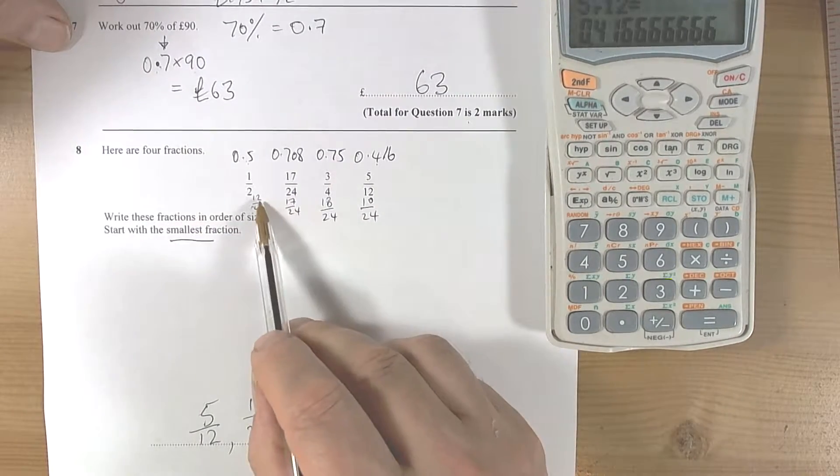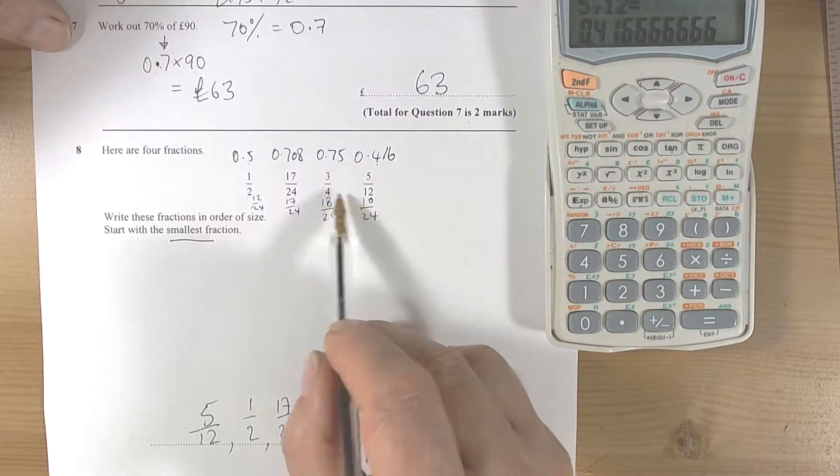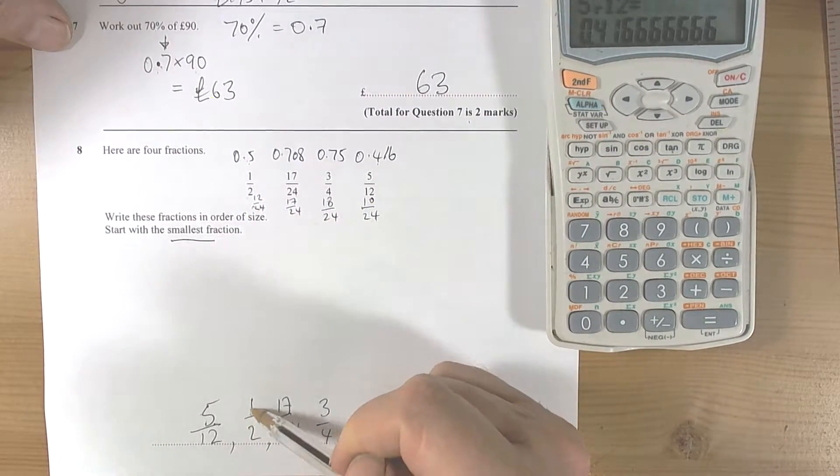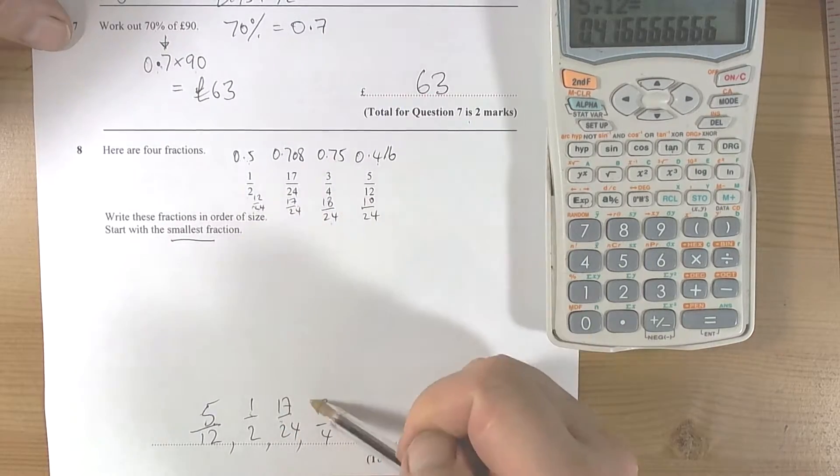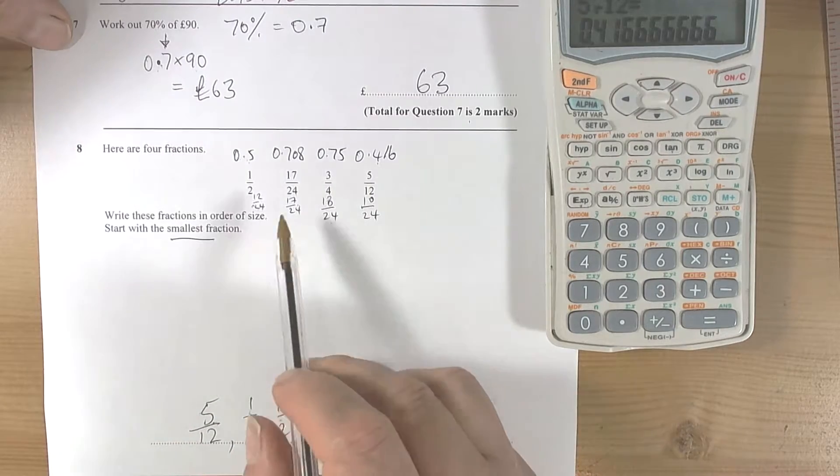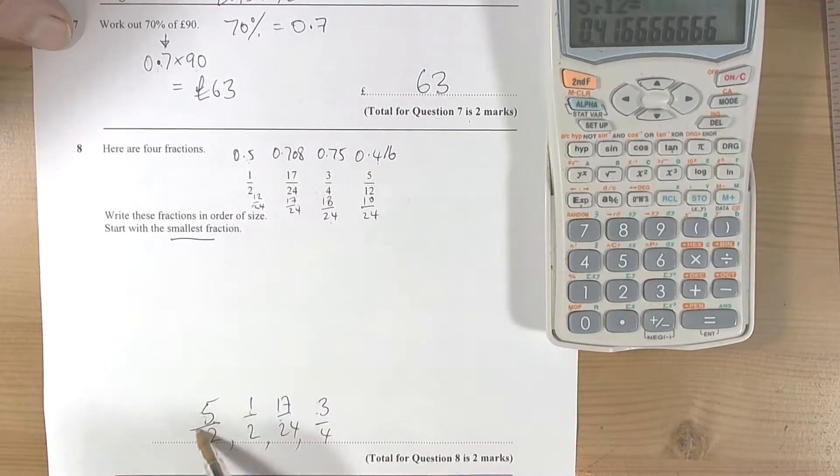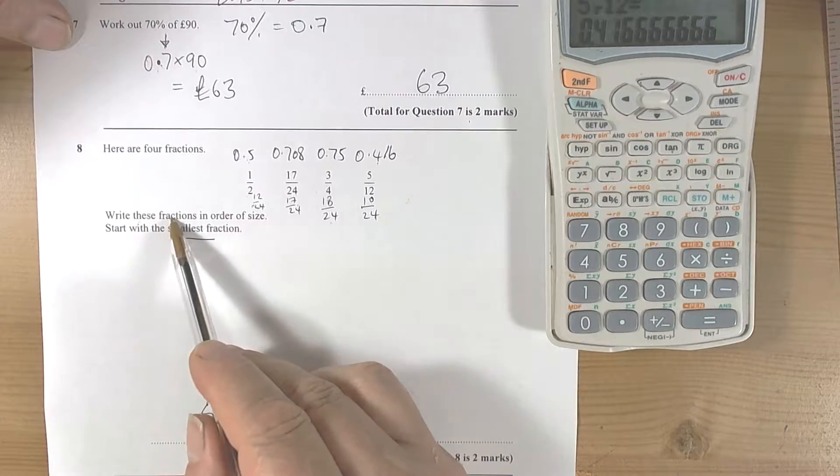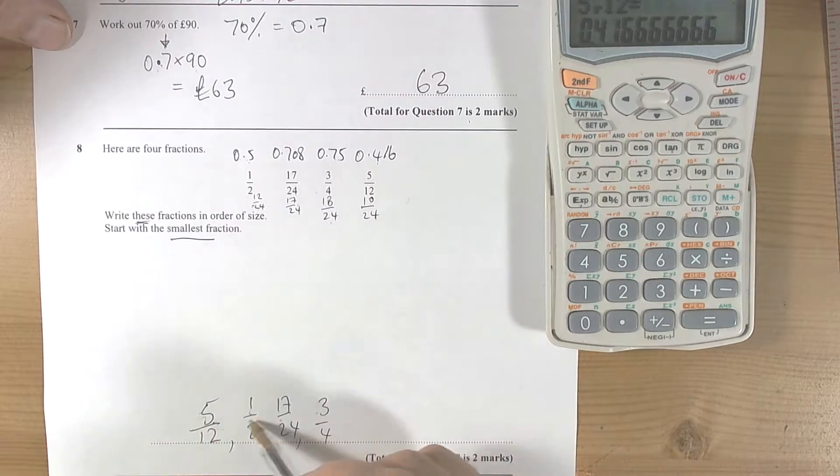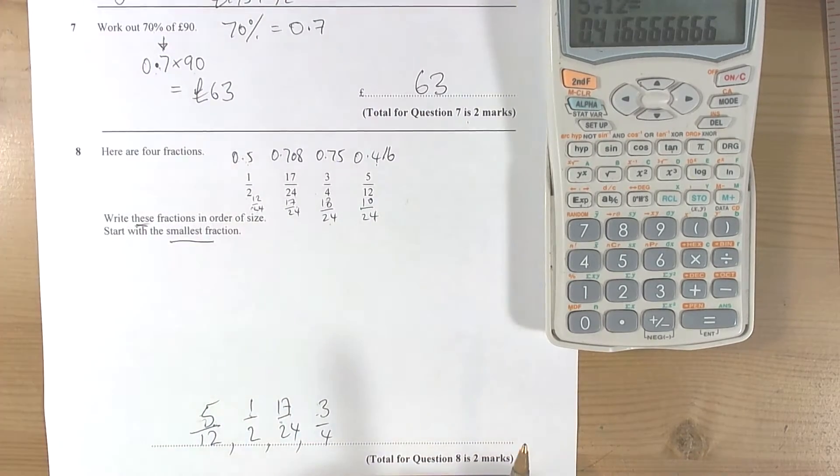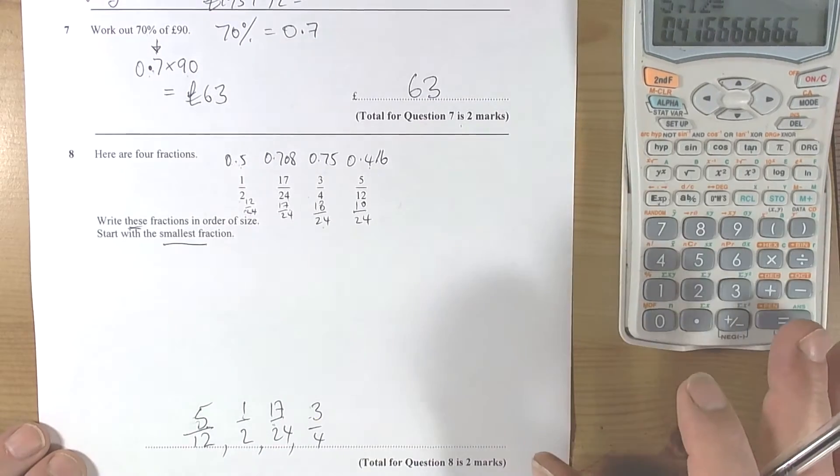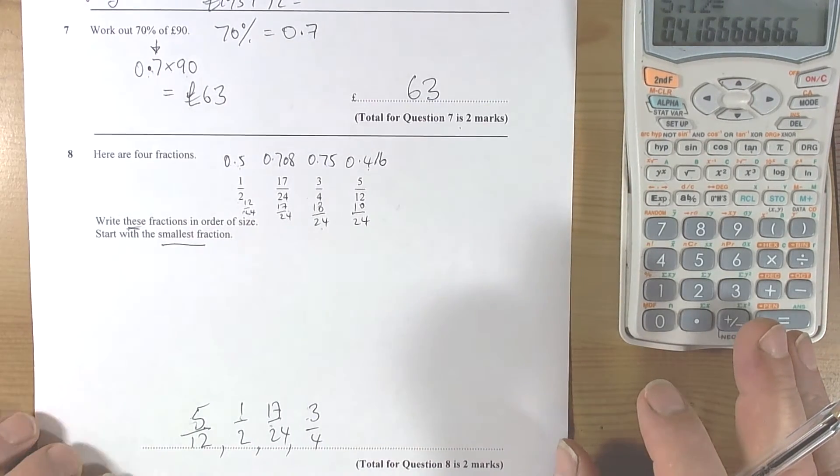Again, if we do this by checking with this, 10/24 is the smallest number of 24, so that was correct. 12/24 is next, 17/24 is next, and 18/24 is the last one. Notice the final answer is written with the original fractions given now, because this is about writing these fractions in size order. So don't make the mistake of writing the decimals and things like that. Okay, so that's some examples of how to work with fractions and write in size order using a calculator.